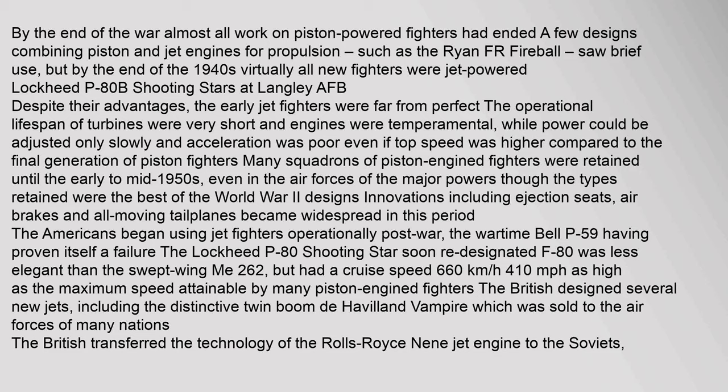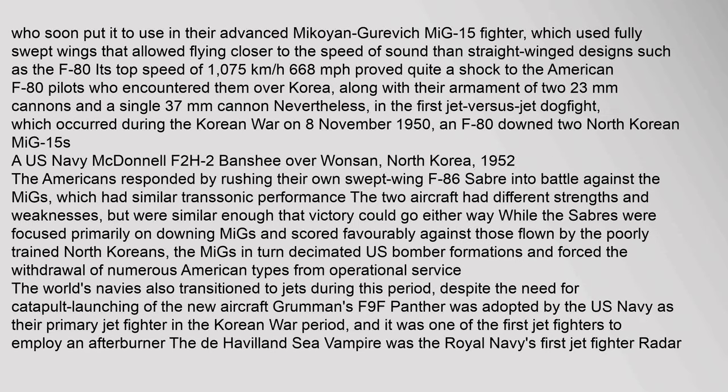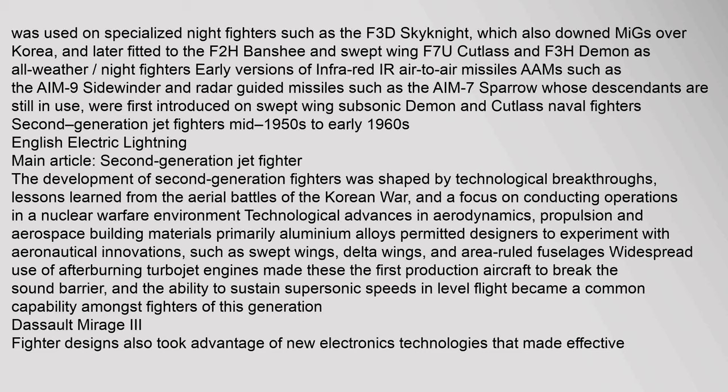The Americans began using jet fighters operationally post-war. The wartime Bell P-59 having proven itself a failure, the Lockheed P-80 Shooting Star soon re-designated F-80 entered service. The Soviets quickly put the swept-wing Mikoyan-Gurevich MiG-15 to use, which used fully swept wings allowing flight closer to the speed of sound than straight-winged designs like the F-80. Early versions of infrared air-to-air missiles such as the AIM-9 Sidewinder and radar-guided missiles such as the AIM-7 Sparrow, whose descendants are still in use, were first introduced on swept-wing subsonic naval fighters.